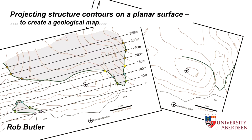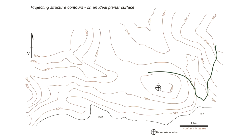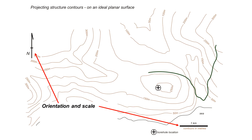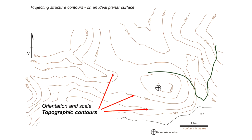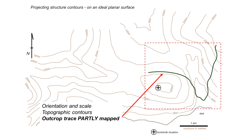This exercise is designed to build skills in applying basic principles of structure contours — to analyse a simple map pattern of a geological boundary between two units, and then to use this analysis to project the trace of this boundary into the unmapped regions of the map. This base map has an orientation and a scale, showing the landscape in topographic contours separated by 50 metre intervals. The area already mapped is within the red box, showing the simple trace of a single geological boundary as the green line.